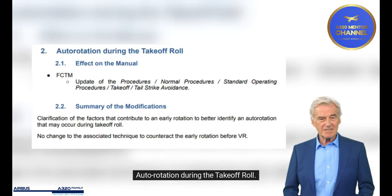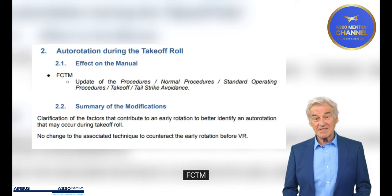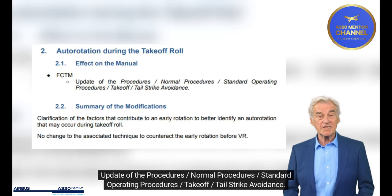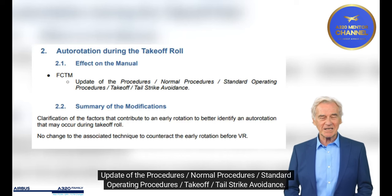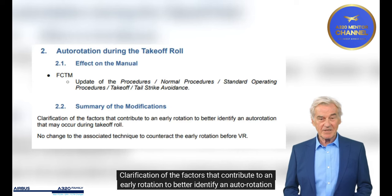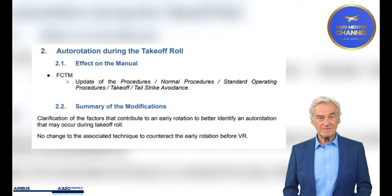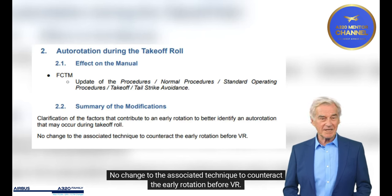Auto-rotation during the take-off roll. Effect on the Manual FCTM. Update of the Procedures: Normal Procedures, Standard Operating Procedures, Take-off, Tail Strike Avoidance. Summary of the Modifications: Clarification of the factors that contribute to an early rotation, to better identify an auto-rotation that may occur during the take-off roll. No change to the associated technique to counteract the early rotation before VR.